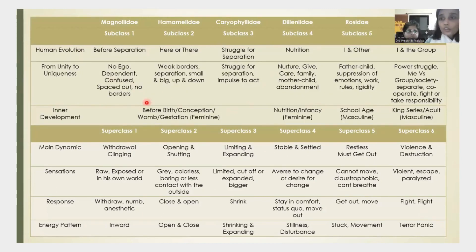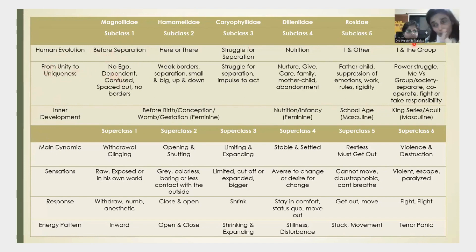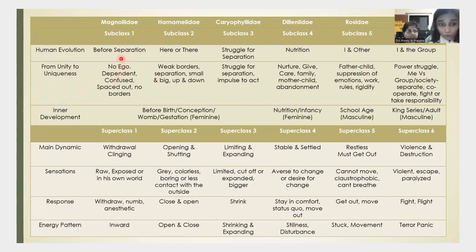If we look at this table, it has six subclasses. On the top is what we already studied yesterday with Dr. Rennie. The first subclass is about before separation — still in the womb. As we go from the first subclass to the last, the journey is from unity to uniqueness, from no ego to issues about power and struggle and me versus the group.